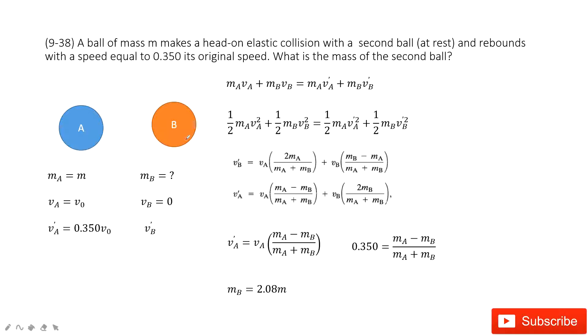In this one, you can see we have two objects A and B. Mass A is given. Mass B is unknown. The initial velocity for A and B is given.